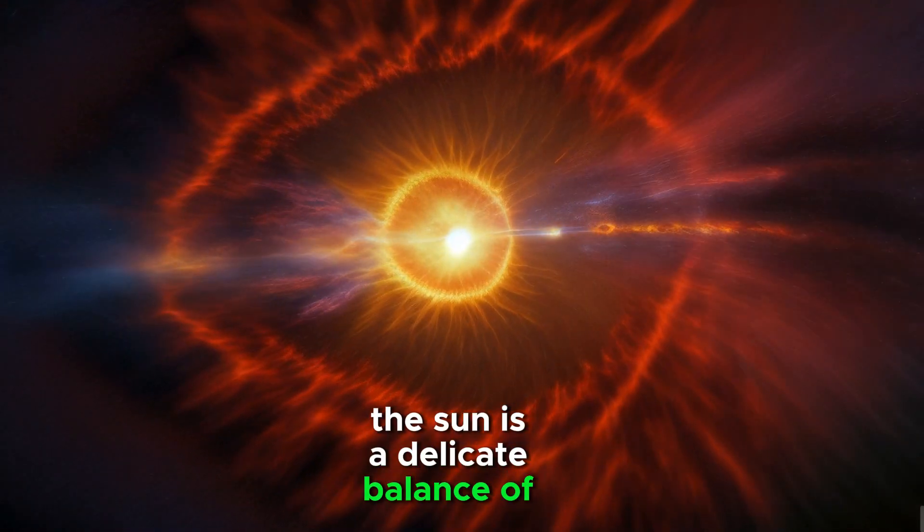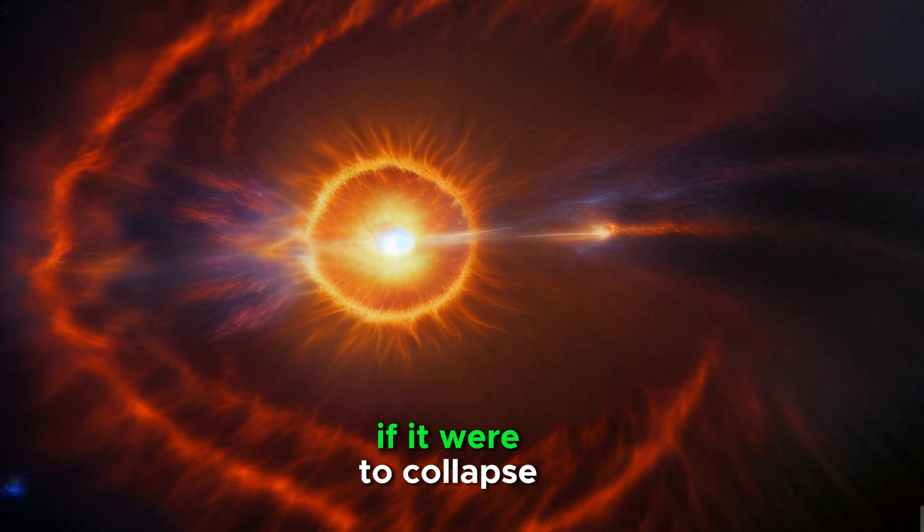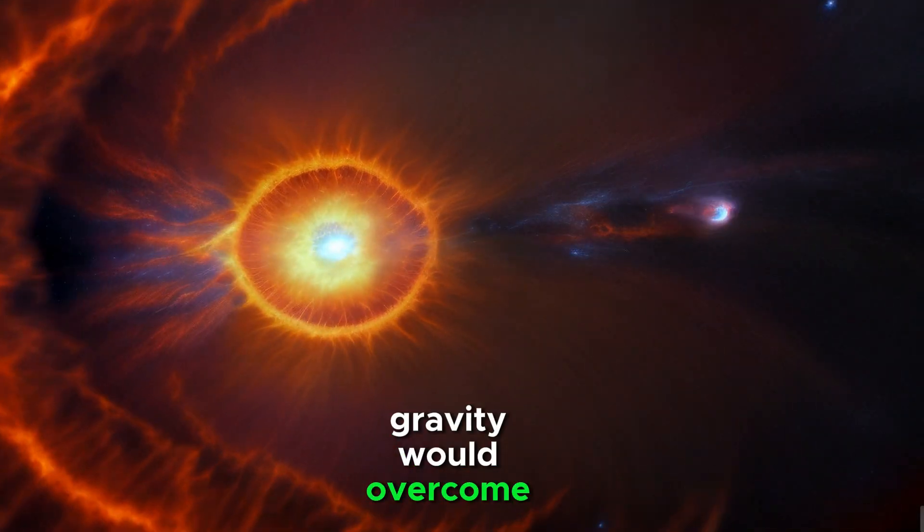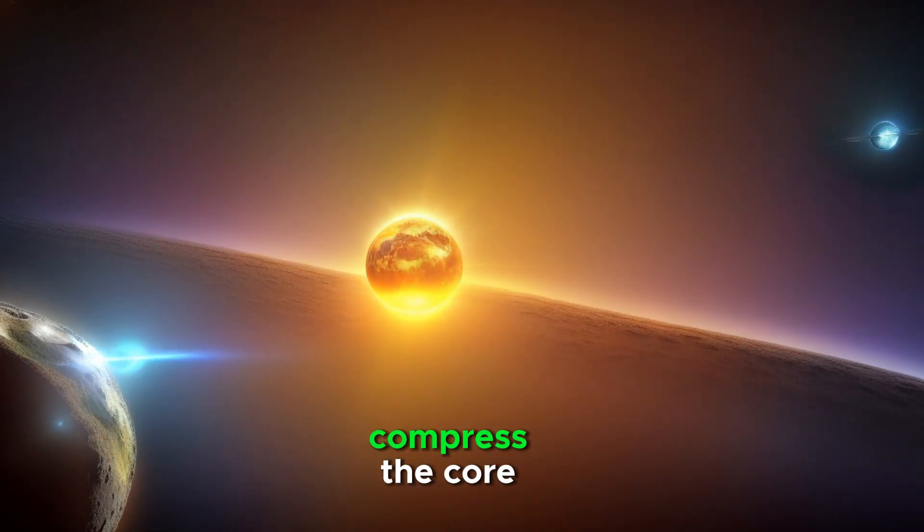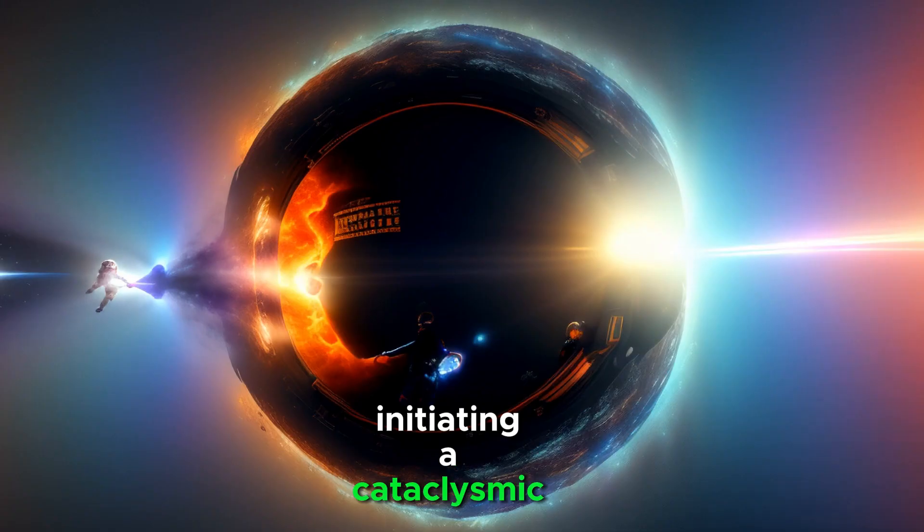The Sun is a delicate balance of forces. If it were to collapse, gravity would overcome the outward pressure from nuclear fusion in its core. This rapid collapse would compress the core, initiating a cataclysmic chain of events.